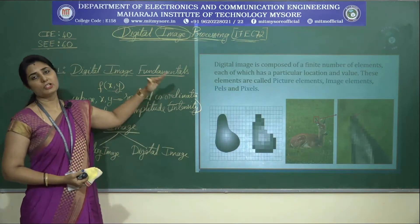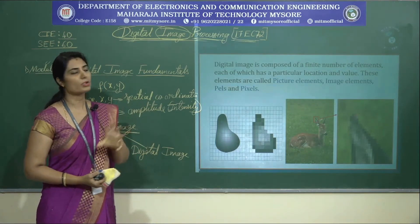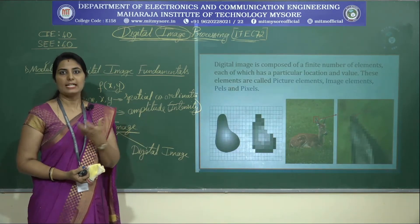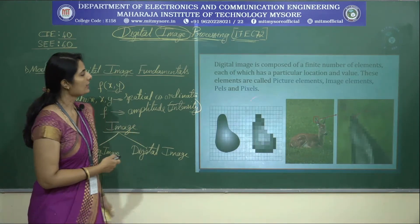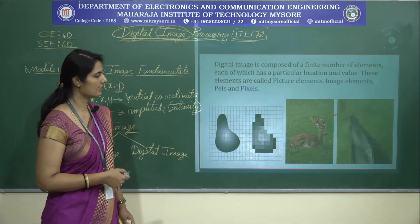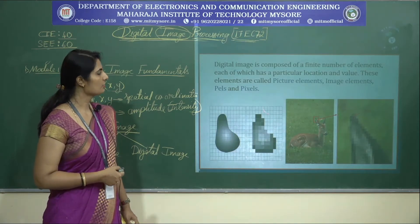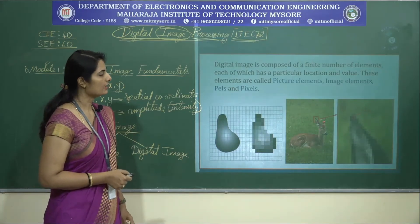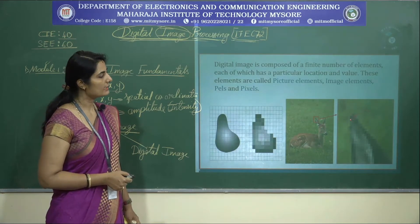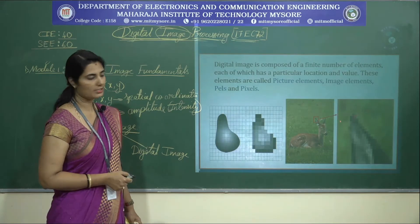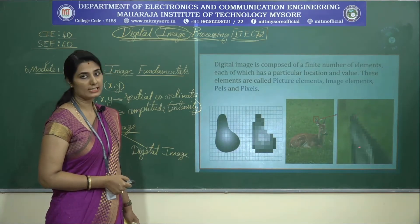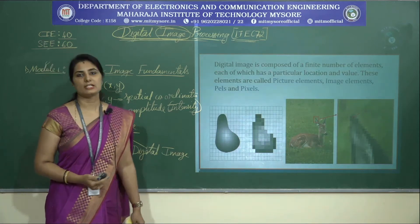A digital image is composed of a finite number of elements, each of which has a particular location and value. These elements are called picture elements, image elements, pels, and pixels — the most widely used term being 'pixel.' Looking at this picture, the last image is the magnified version of a dog's ear, where the element marked in red represents a pixel. These pixels have constant intensity values.